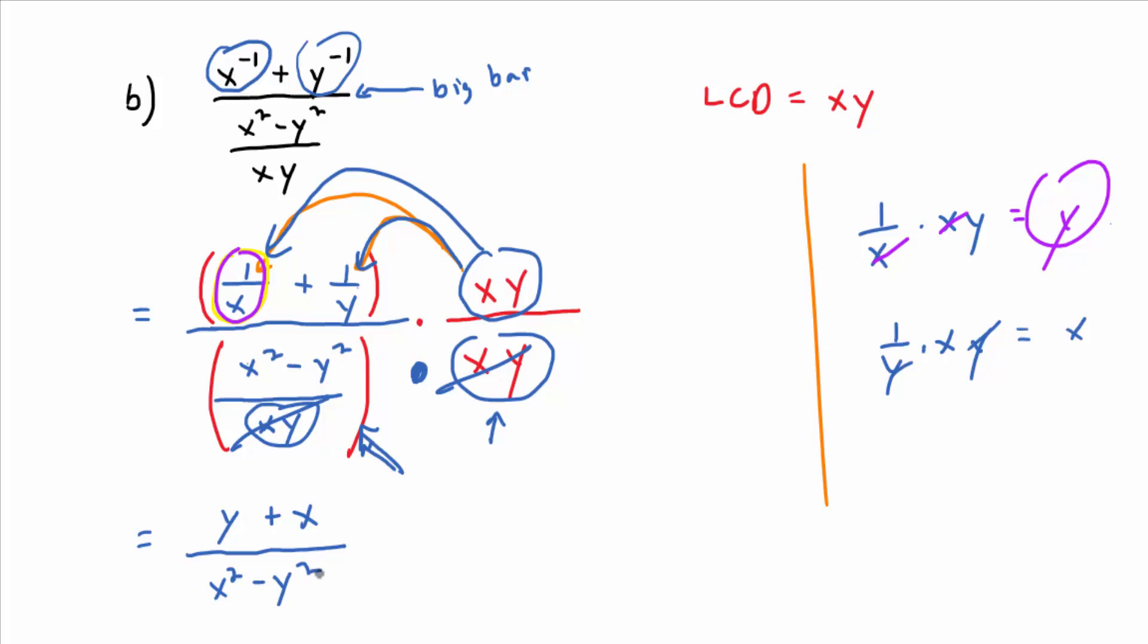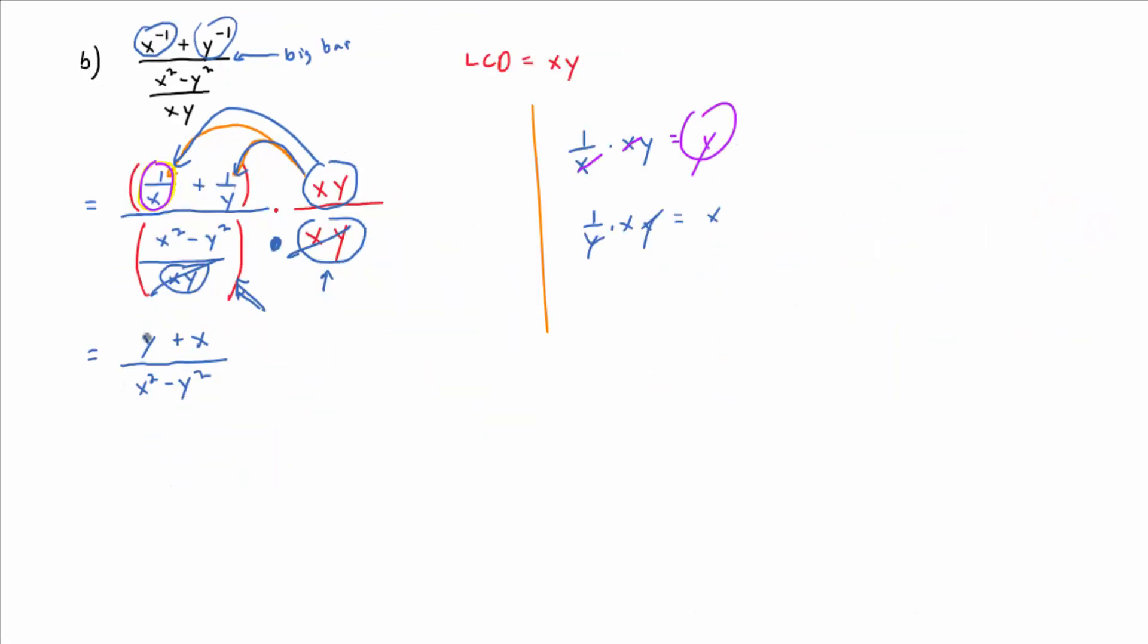Now my question to you is are we done? No. We're not done because this guy, its denominator factors to be something relevant. It's the difference of two squares, right? What is x squared minus y squared factor to be? x plus y times x minus y.